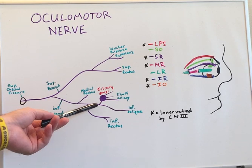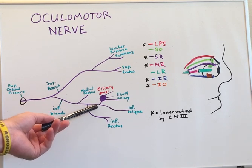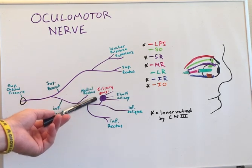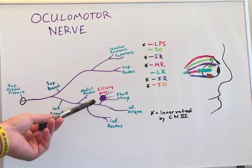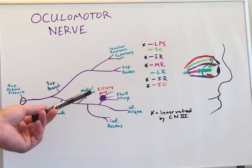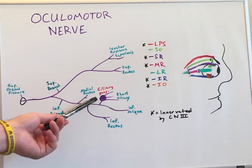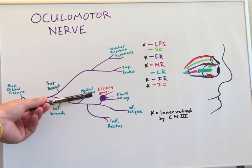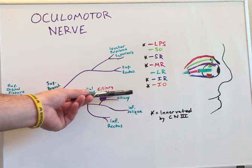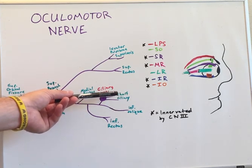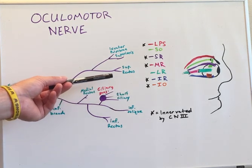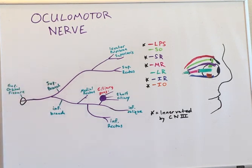The nerve fibers reach out into the ciliary ganglion. This is where the parasympathetic fibers of the ocular motor nerve course through, and they delve into the short ciliary nerves. The short ciliary nerves go to the sphincter pupillary muscle as well as the ciliary muscle.